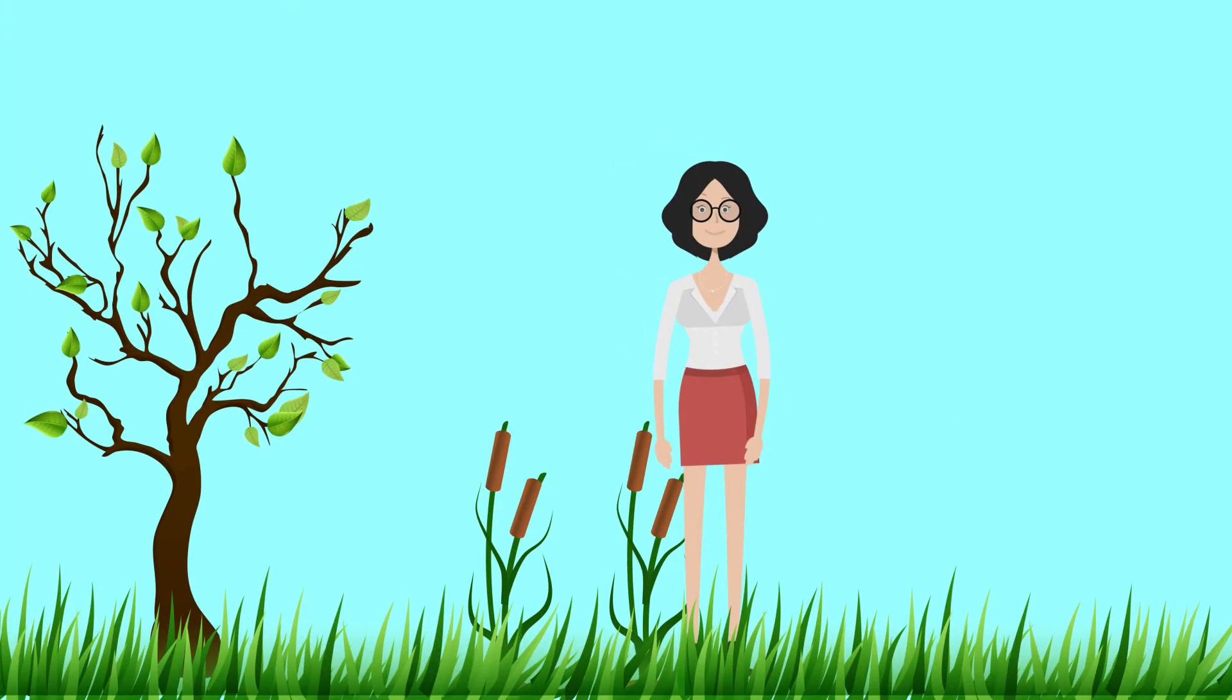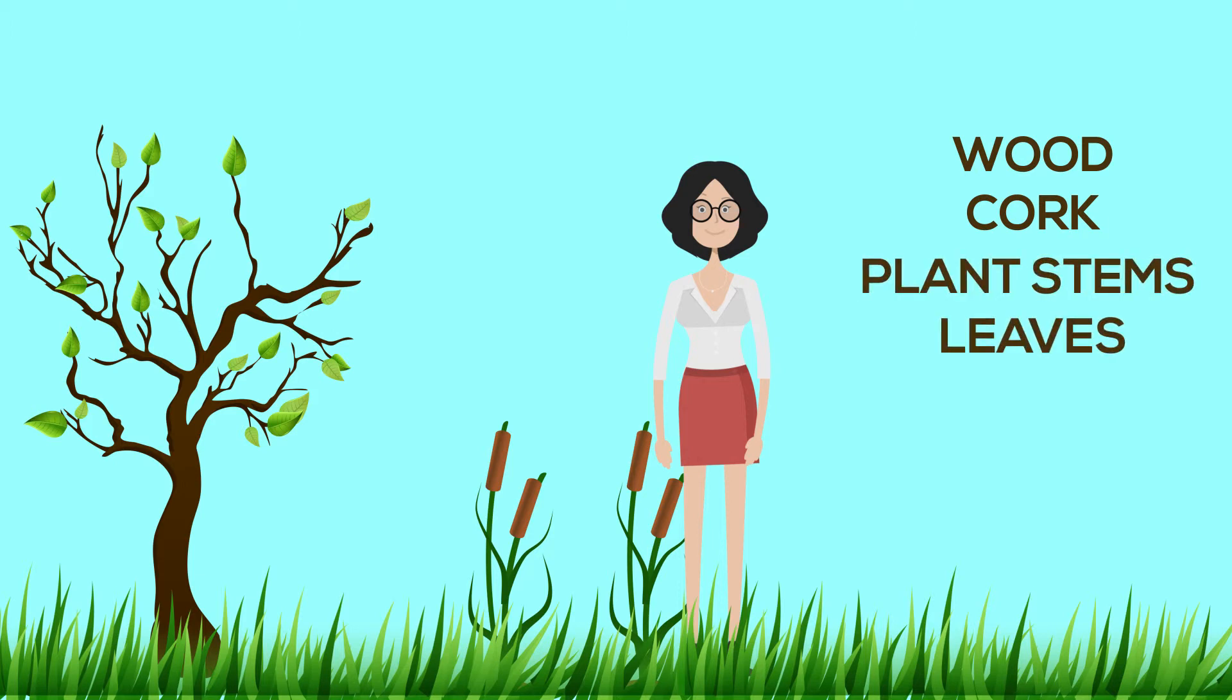So I am going to take a page from nature. Materials with such cellular structures are widespread in nature, such as wood, cork, plant stems, and even leaves.